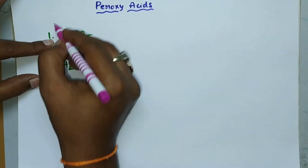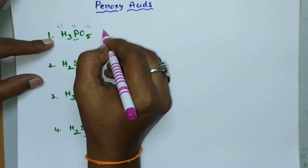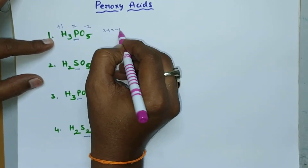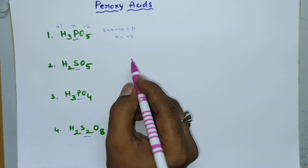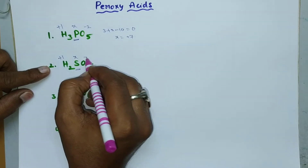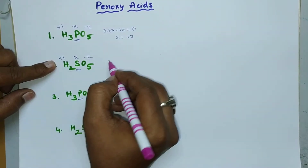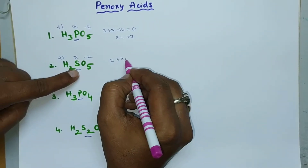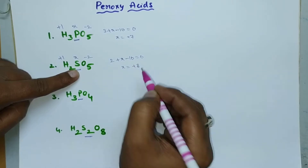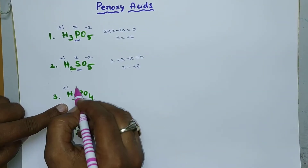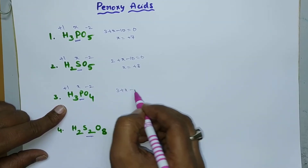For the first molecule, the oxidation state of phosphorus: here it is +1 and X, and oxygen is -2. So 3 + X - 10 = 0, giving X = +7. Next: 2×(+1) + X - 10 = 0, so X = +8. And here: hydrogen +1, phosphorus X, oxygen -2. So 3 + X - 8 = 0, giving X = +5.